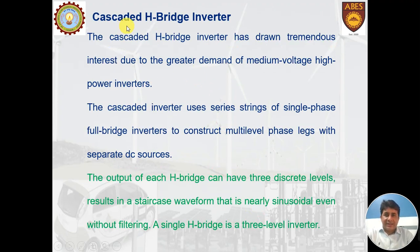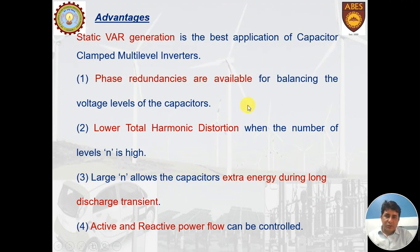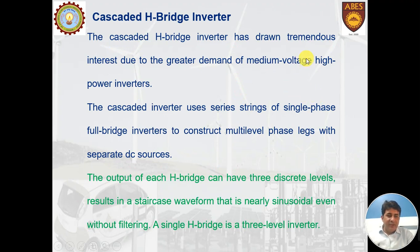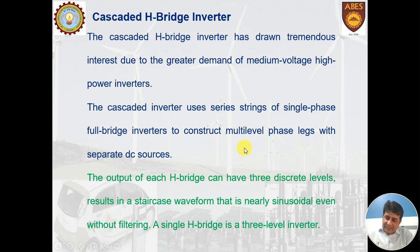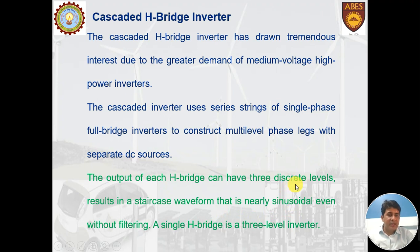The third topology is the cascaded H-bridge inverter. Unlike the previous two topologies which had a single DC source, here there are different discrete voltage sources at the input side. The output of each H-bridge can have three discrete levels, resulting in a staircase waveform. These inverters are widely used in medium voltage, high power applications and are gaining huge attention in renewable energy.